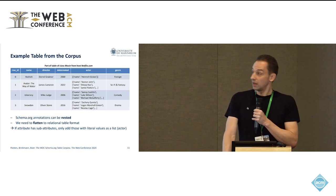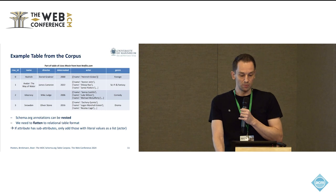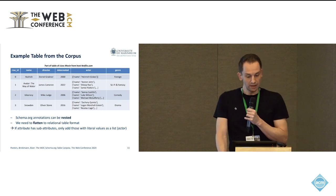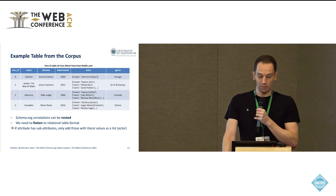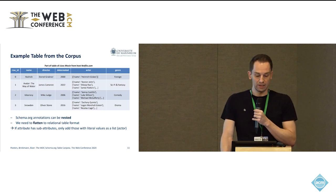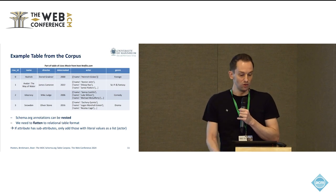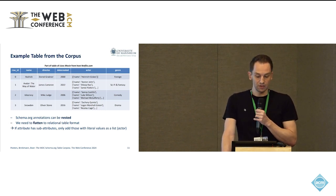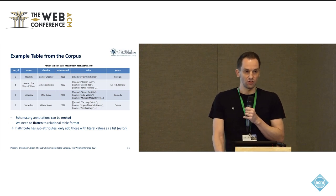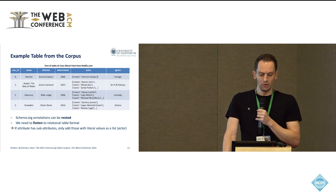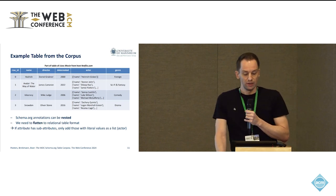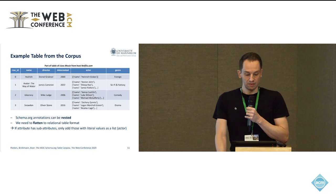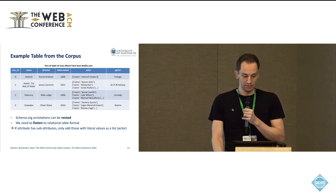Here is an example table from our corpus — a part of an example of a class Movie from the host netflix.com. It looks quite normal like a relational table, unless you look at the actor column. Schema.org annotations can actually be nested, so a movie can have an attribute 'actor' which then has further sub-attributes. Since movies usually have more than a single actor, we flatten this nested structure into relational table format: if any attribute has sub-attributes, we only add those with literal values as a list to our table, which is what you see here for the actor column.